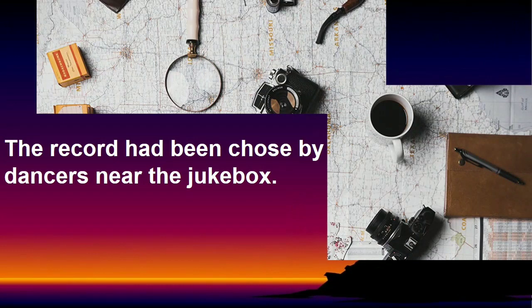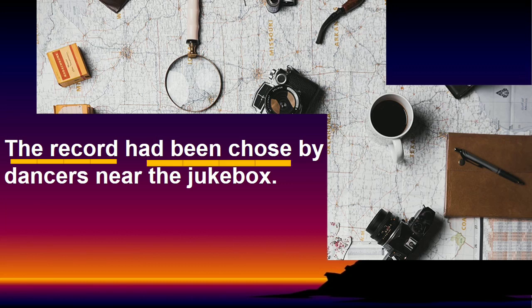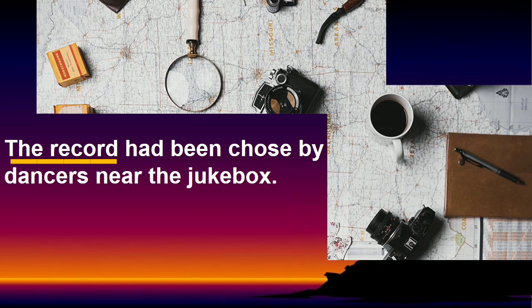Let's practice more. 'The record had been chose by dancers near the jukebox.' Let's identify. The subject is 'the record' and the verb is 'had been chose.' Is it correct or incorrect? The record is definitely chosen — it cannot choose by itself. So this sentence should be passive. The structure is subject + to be + verb 3.